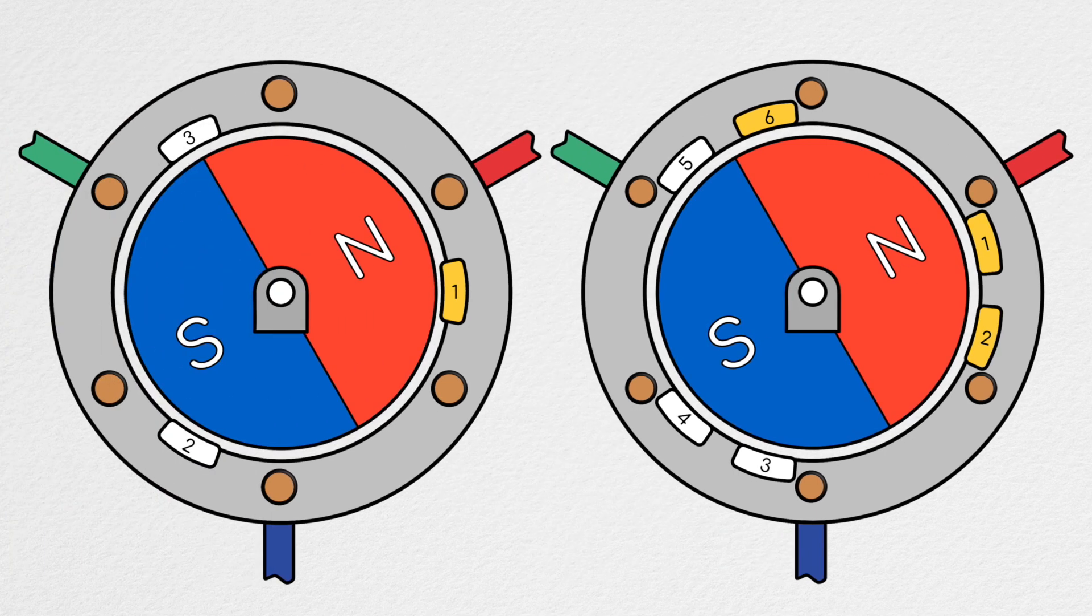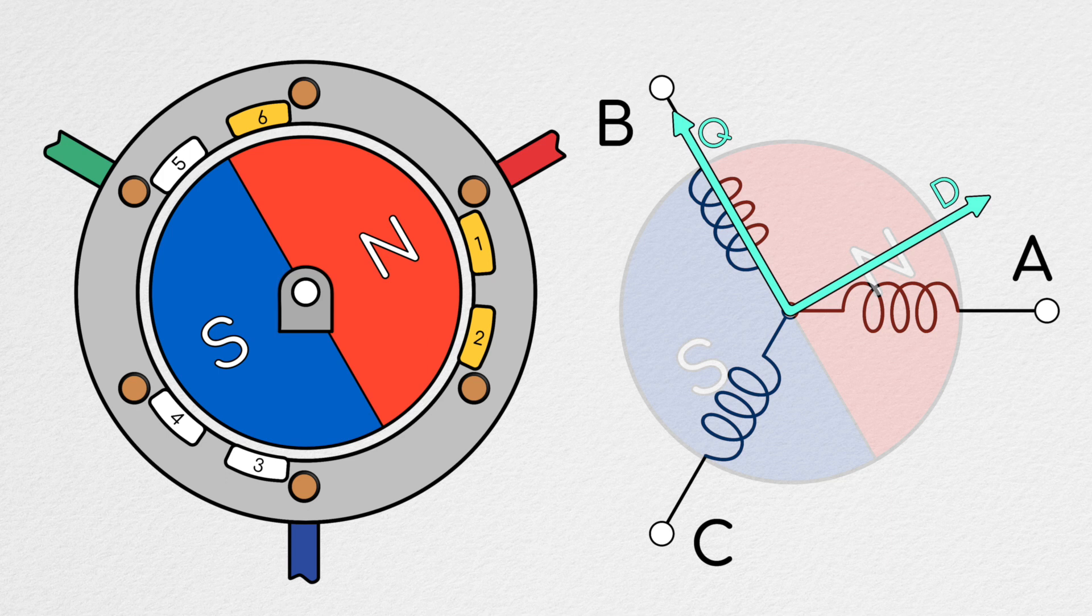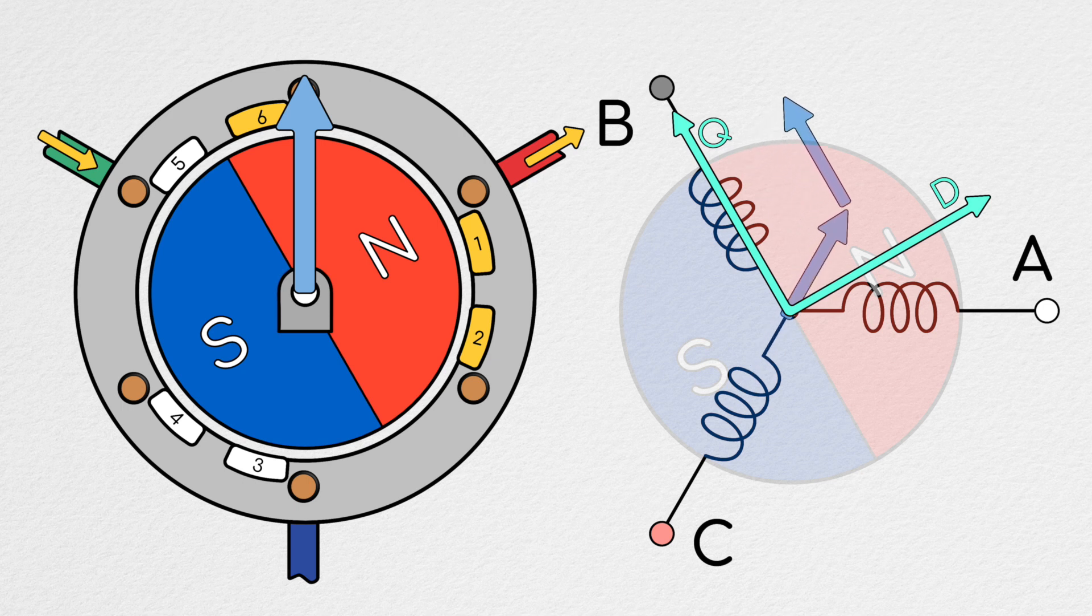Ideally, assuming that we're using a non-salient pole motor, we want our current and magnetic field vectors to point in the Q direction, which for this orientation is aligned with the B phase. If we're only connecting two phases at a time, as we did with six-sector block commutation, producing a vector in this direction is not possible.